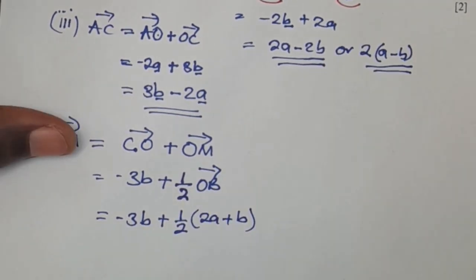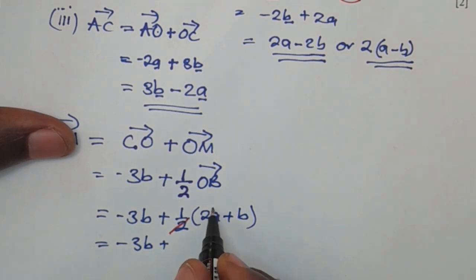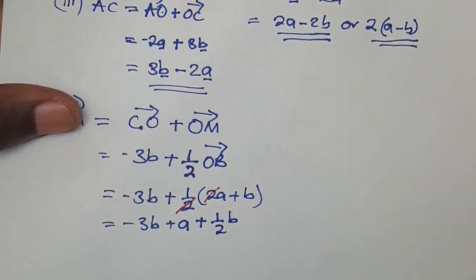So we can simplify this. First we're going to open the brackets there, so here we're going to have negative 3b plus half times 2a. Half times 2a, you're going to see that the 2 and this 2 cancel. They are dividing, so you remain with a. Then plus half times b would be half b.